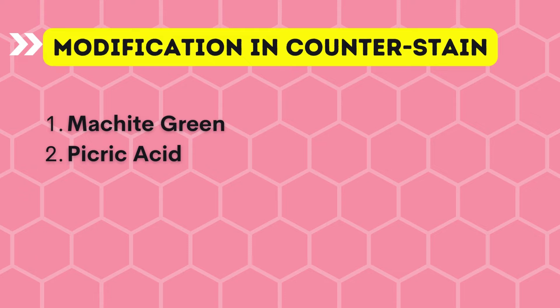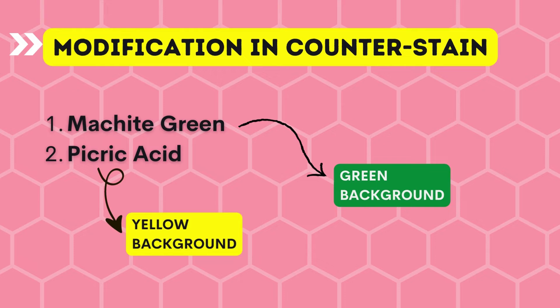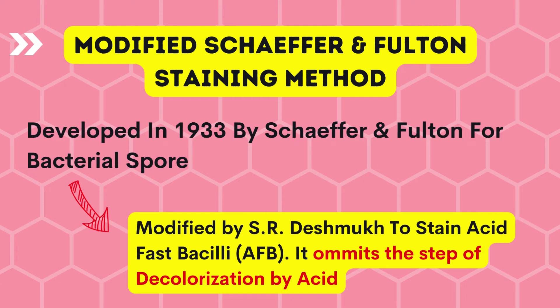Another modification involves the counter stain. Instead of methylene blue, we can use malachite green or picric acid as a counter stain. If malachite green is used, the background will appear greenish in color. If picric acid is used, the background will appear yellowish in color.